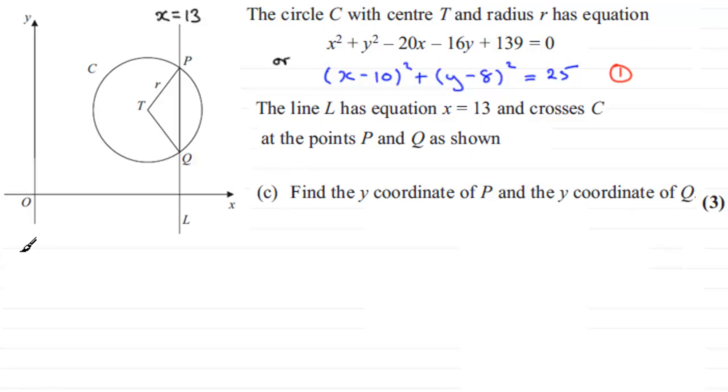Okay, so I'm going to say that when x equals 13, what we're going to have is that if we substitute it into here, we're going to have 13 minus 10, which is 3. So we've got 3 all squared, then plus y minus 8 all squared equals 25. Well, clearly this is 9 and so if I subtract 9 from both sides, you therefore have y minus 8 all squared equals 25 minus 9, which is 16.